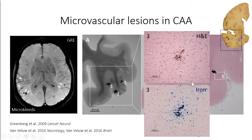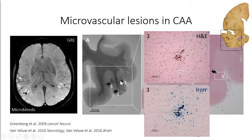In adjacent sections stained for iron, we see these lesions are very iron-positive, and we believe this is what makes them so visible on MRI, since MRI is very sensitive to iron. With a scale bar of 100 microns, one lesion is not much bigger than 200 microns in diameter — but its iron positivity makes it visible. Another lesion almost spans the entire cortical ribbon, nearly two millimeters in diameter, so it appears much bigger than it actually is. That's why we're so good at detecting these lesions during life.